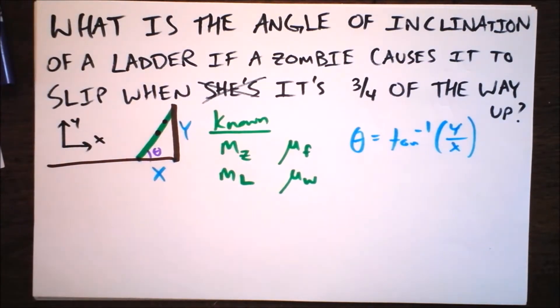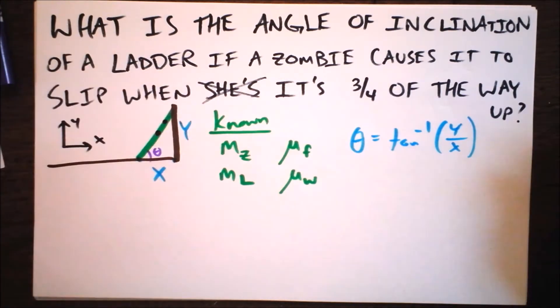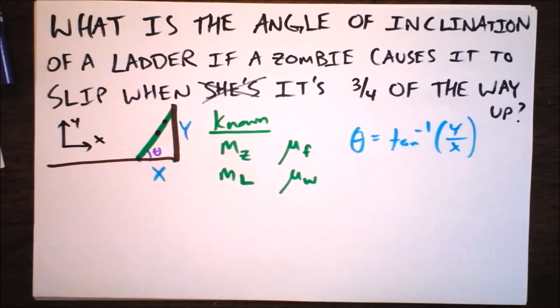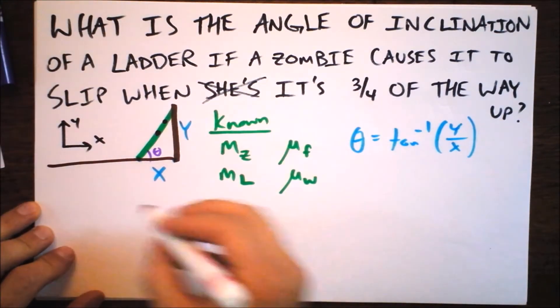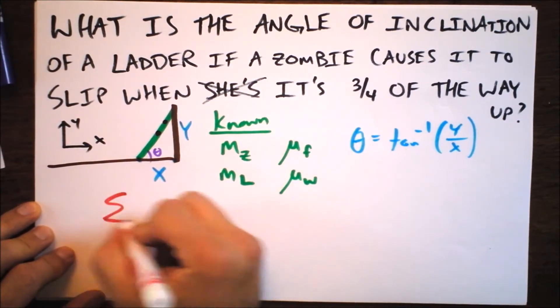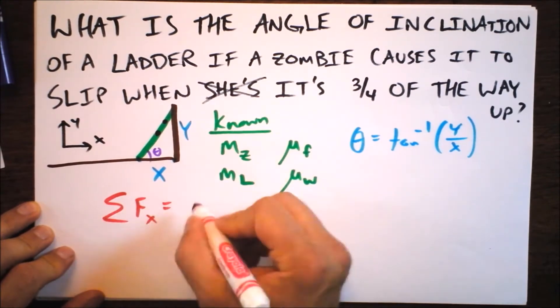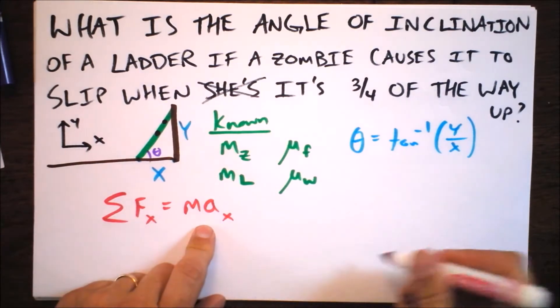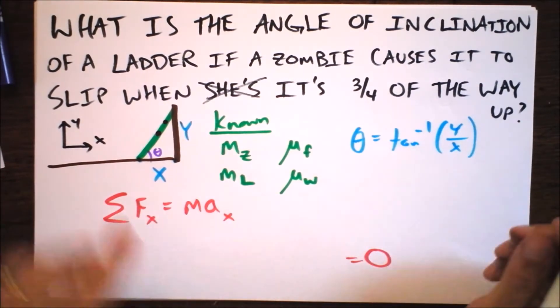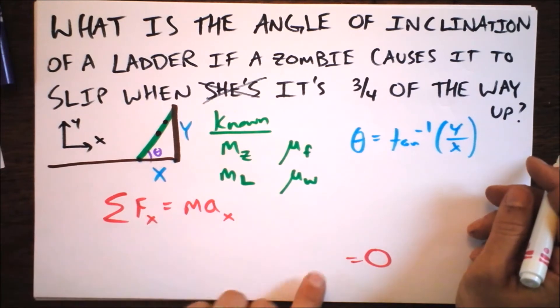If I get to a point where I can solve all my equations for the ratio of y versus x, then I can take the inverse tangent of it and find the requested angle of the ladder where the zombie causes it to slip at that location. The equations start out quite nice and become a little bit unpleasant.